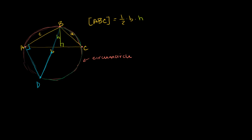We have this arc drawn in magenta — the arc that goes from A to B. That arc subtends two different angles in our drawing: it subtends angle ACB right over here, but it also subtends angle ADB. So these two angles are going to be congruent — they'll both have half the degree measure of this arc, because they're both inscribed angles subtended by the same arc.